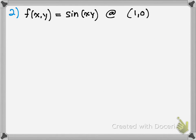For the second example, you're asked to find the tangent plane by computing the partial derivatives of x and y at a certain point. First, calculate the z value: plug in x equals 1 and y equals 0, and you should get 0, because sine of 0 is 0. So this point is (1, 0, 0).